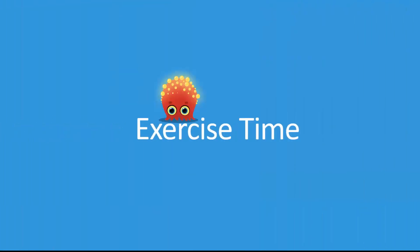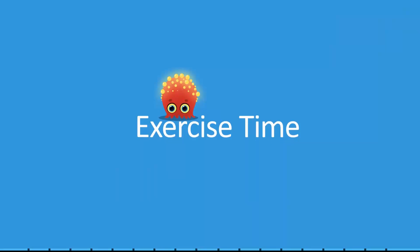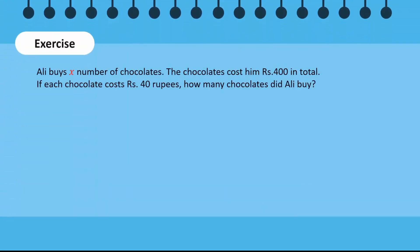Time for an exercise. Ali buys x number of chocolates. The chocolates cost him 400 rupees in total. If each chocolate costs 40 rupees, how many chocolates did Ali buy? Ali buys x number of chocolates. The total money spent is equal to 400 rupees and the cost of each chocolate is equal to 40 rupees.